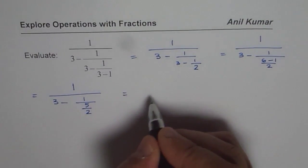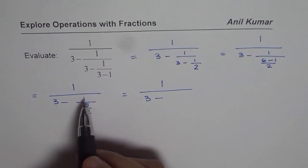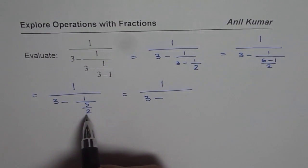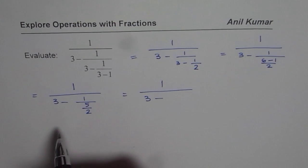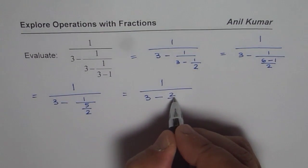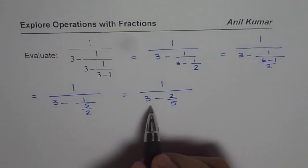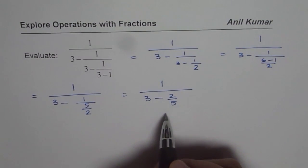Now what does that mean? It really means that it is 1 over 3 minus 1 divided by 5 over 2 means multiply by 2 over 5. 1 times 2 over 5 is same as 2 over 5. 1 times anything is just the same.